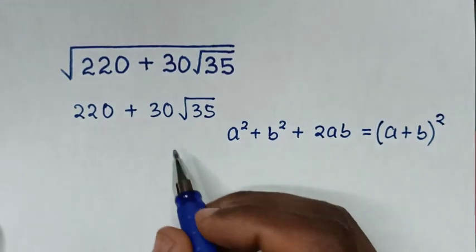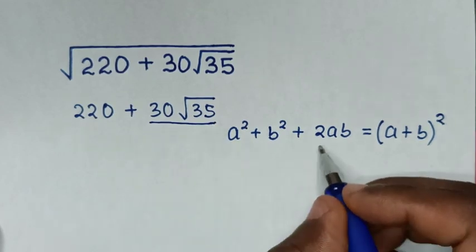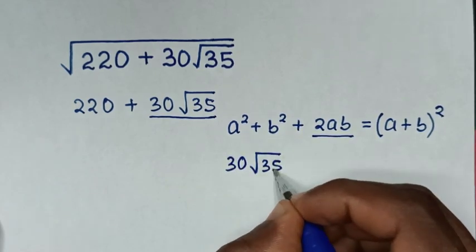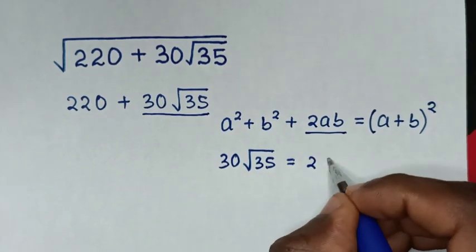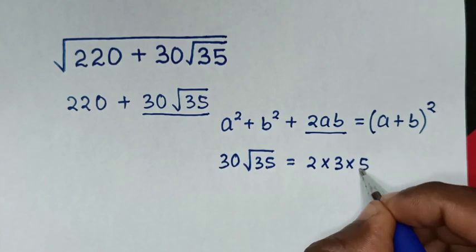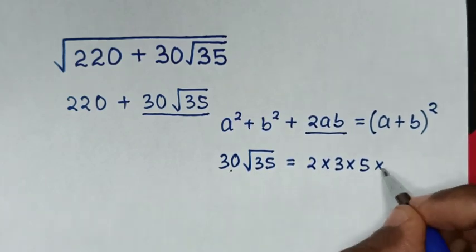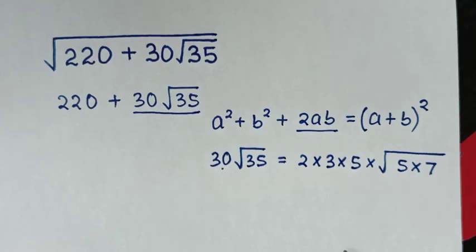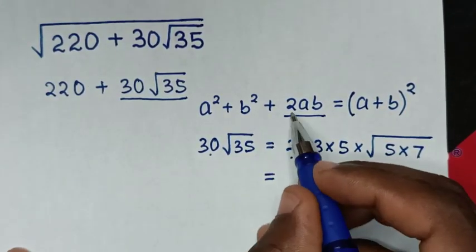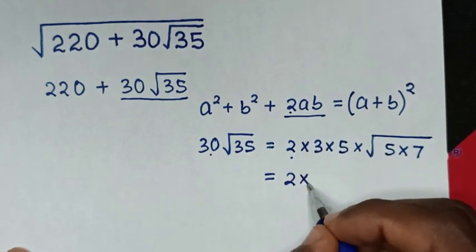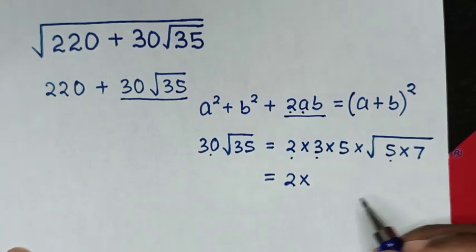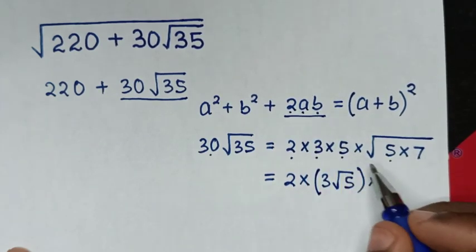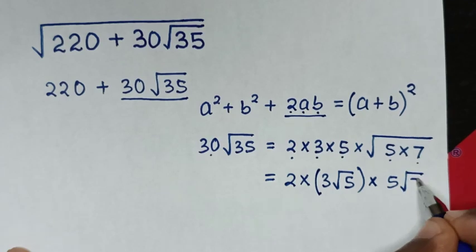From the part 30 square root of 35, we'll express it in the form of 2ab. So 30 square root of 35 is equal to 2 times 3, which is 6, then times 5, which is 30, then times square root of 35, which is square root of 5 times 7. So in the next step, this equals 2 times a, where a is 3 square root of 5, times b, where b is 5 square root of 7.